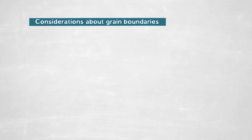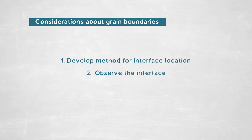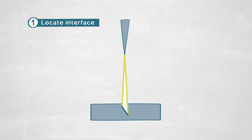First, we have to develop a method to specifically locate such an interface. We take our very thin copper thin film and use a very small ion beam — basically as a sharp razor blade — with which we extract a specific part of our sample containing this particular grain boundary.